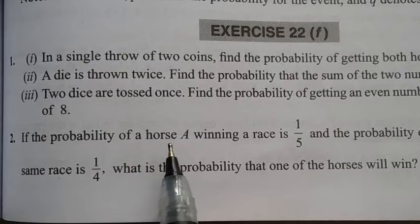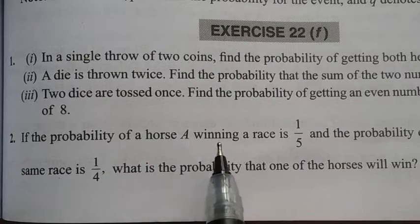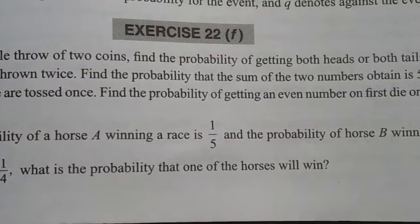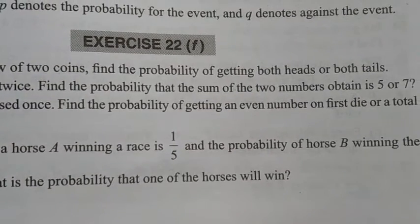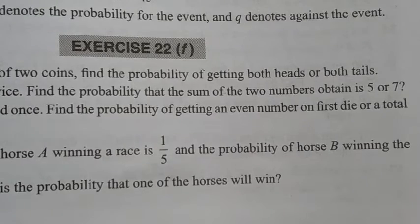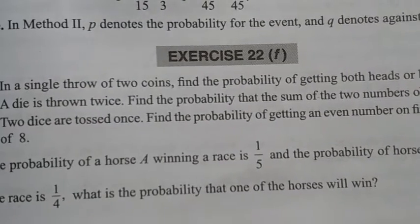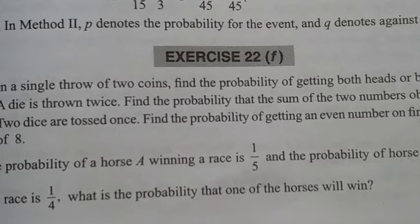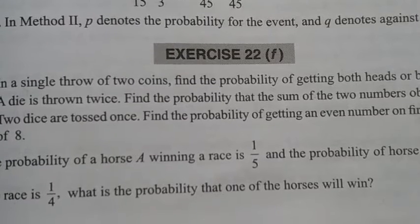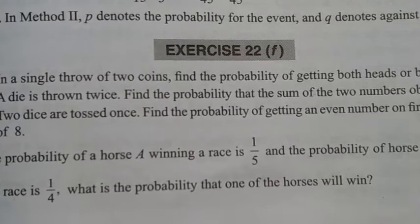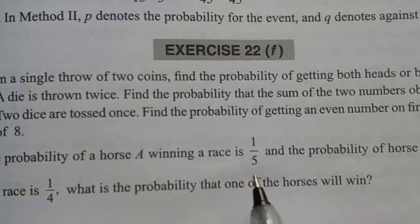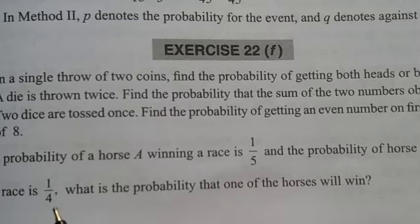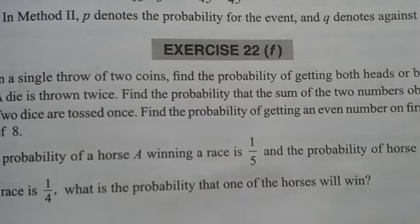If the probability of horse A winning a race is 1/5 and the probability of horse B winning the same race is 1/4, what is the probability that one of the horses will win? The probability of the first horse is 1/5 and the probability of the second horse is 1/4.